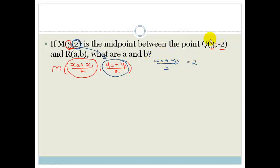do you agree we can say that y2 plus y1 over 2 is going to equal to 2. Now if we call Q point 2, then this would be x2 and this would be y2. And then this R would be x1, y1. So if we substitute in,